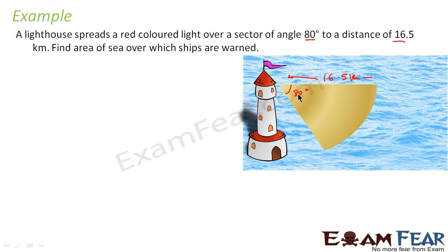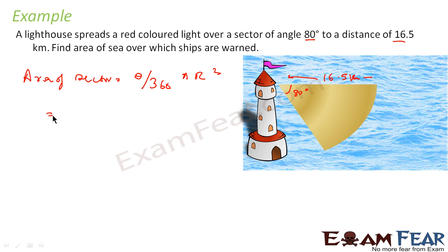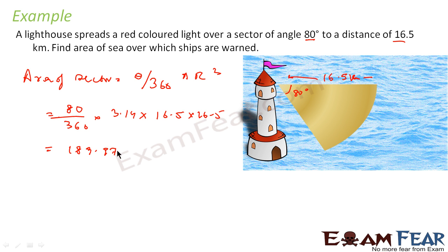This is a sector with θ = 80° and r = 16.5 km. Area of sector = (θ/360°) × π × r² = (80/360) × 3.14 × 16.5 × 16.5. Calculating this gives a value of 189.97 km². Since we are talking about area, the unit is kilometer square.